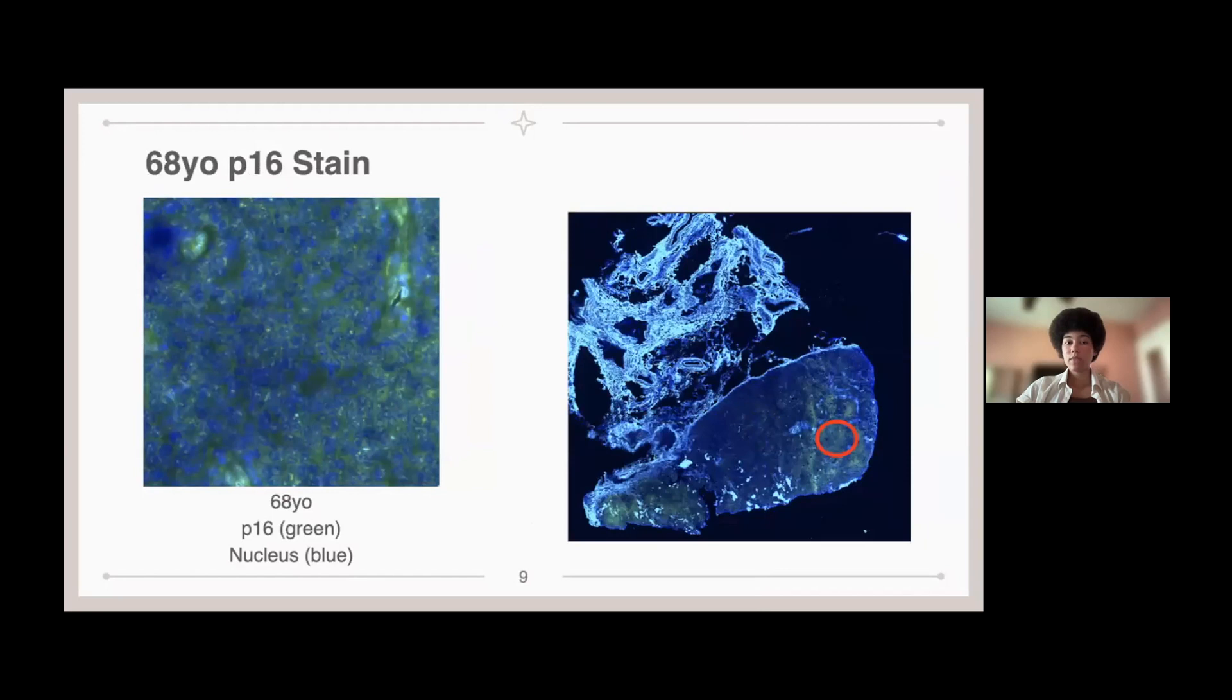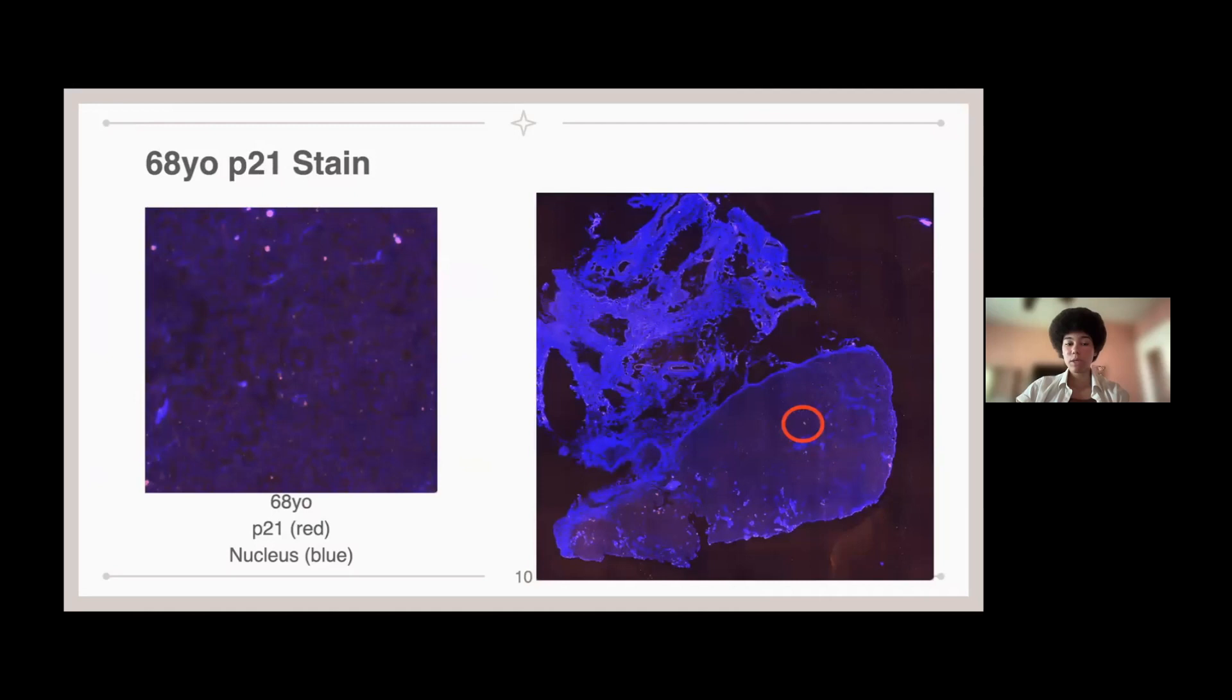On the other hand, this is a 68-year-old P16 stain. As I said before, the P16 is still in green. There is a lot more P16 within the nucleus in this stain. There isn't as much so-called background, and most of it is within the nucleus, indicating an increase in P16 and therefore senescent cells with aging.